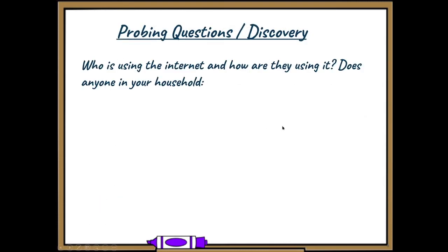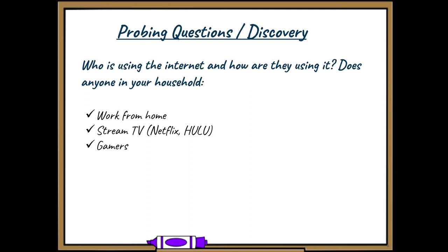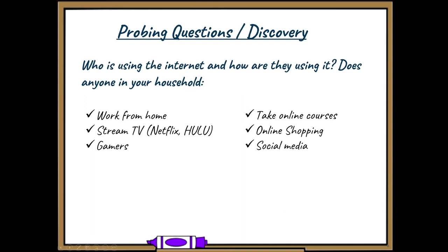Here are examples of probing questions. Who is using the Internet and how are they using it? Does anybody in your household work from home? Do they stream TV — Netflix, Hulu, Disney Plus? Is anybody a gamer — do they play on a console, a computer, a smartphone, or a tablet? Anybody taking online courses? Anyone doing online shopping? Anybody heavy into social media — Instagram, TikTok, Facebook? What you're doing with these questions is gathering information about your specific customer so you can figure out how to transition into giving them a recommendation for one of our secure packages.